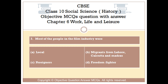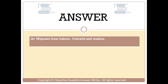Question number 3: Most of the people in the film industry were — Option A: Local. Option B: Migrants from Lahore, Calcutta and Madras. Option C: Foreigners. Option D: Freedom Fighters. The right answer is Option B: Migrants from Lahore, Calcutta and Madras.